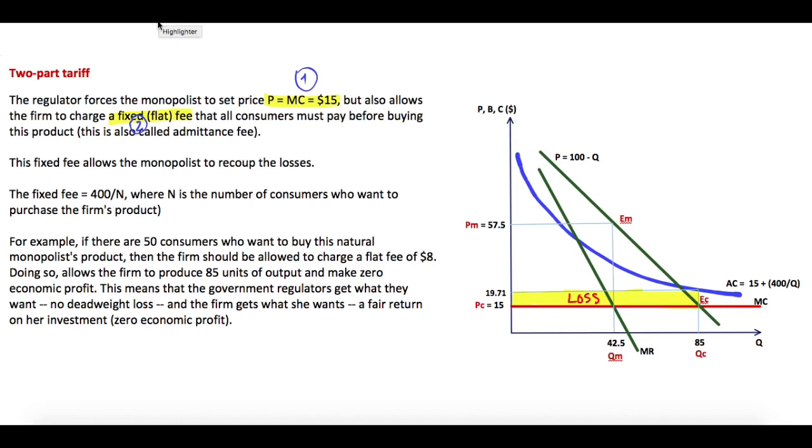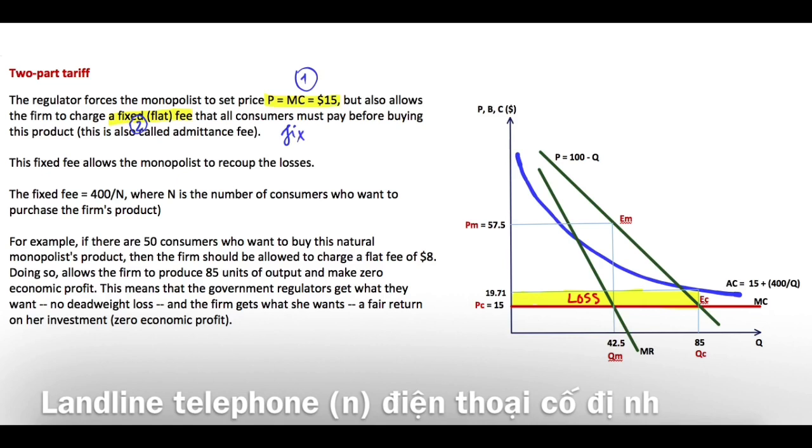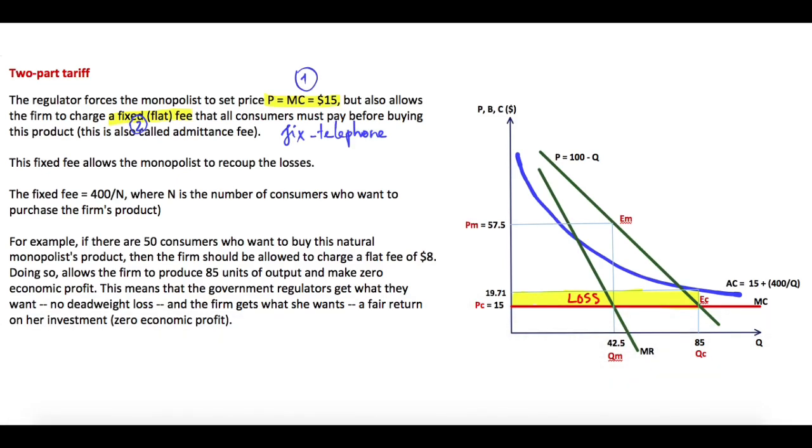It's also called admittance fee. A typical example for this is in the fixed telephone industry, where consumers have to pay a fixed fee plus the price times the amount of consuming, and the price normally equals marginal cost. This fixed fee allows the monopolist to recoup the losses, so it's calculated by the